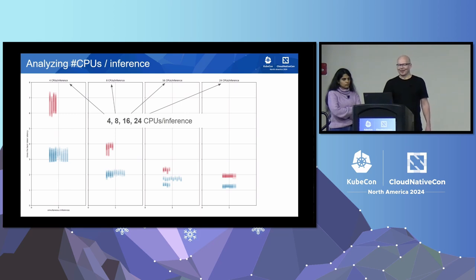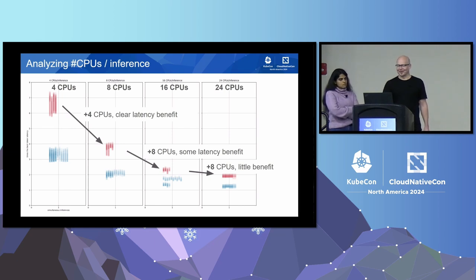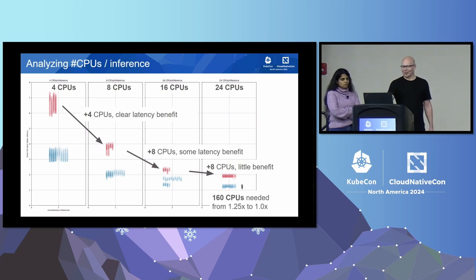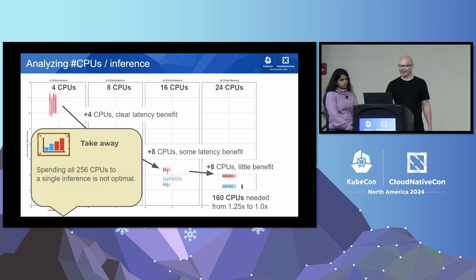Here we have 4, 8, 16, and 24 CPUs per inference with only one inference running on the node. We can observe that moving from 4 to 8 CPUs gives much better latency. From 8 to 16 CPUs the improvement is still clear. From 16 to 24 there is not that much improvement anymore. If we want to squeeze the latency down to 1x, we need 160 CPUs on that host. The takeaway here is that spending all 256 CPUs for a single inference is not quite optimal — we can get the best latency already with 160 CPUs, and after that adding more CPUs doesn't help at all.